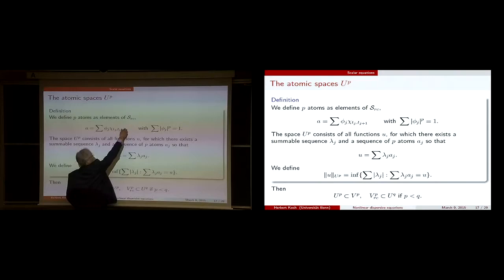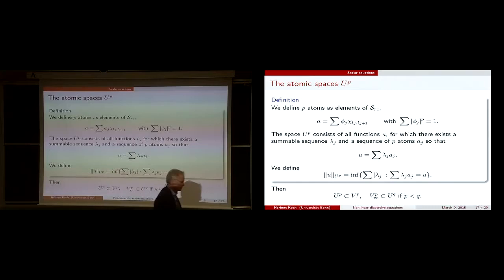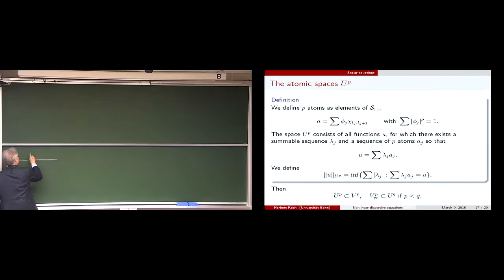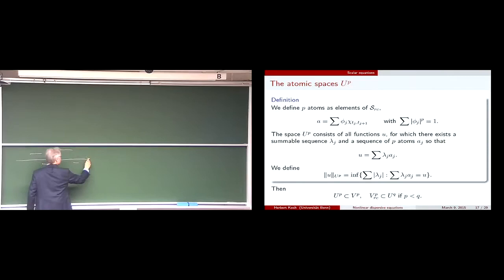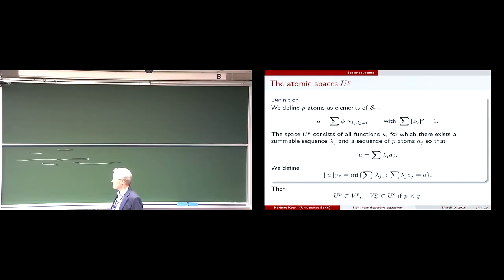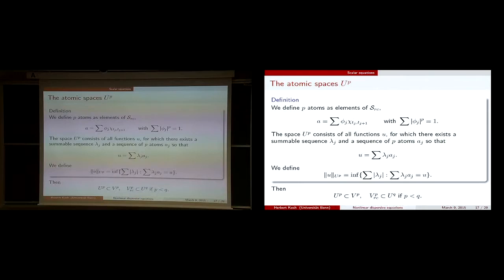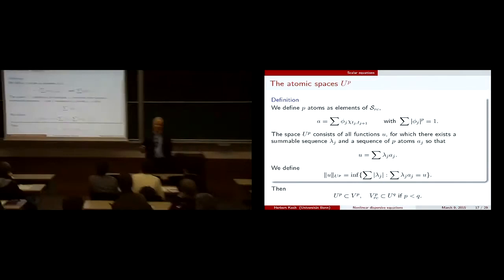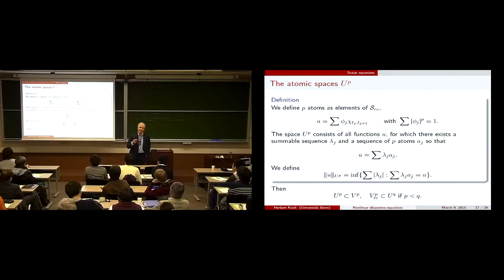A p-atom is to be thought of as size 1. We look at an atomic space, which means linear combinations of p-atoms: we sum lambda_j times atom_j, and define the norm as the infimum over all such representations of the sum of the coefficients. It's not hard to check that U^p is a subspace of V^p, and if q is larger than p, then a right continuous function in V^p gets into U^q.